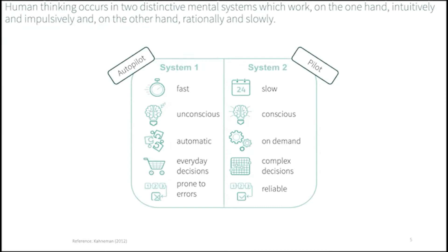Despite being irrational at times, human decision making is far from unpredictable. Research suggests the existence of two different cognitive systems or modes of thinking. System 1 — the autopilot or automatic mode of thinking — operates automatically, quickly, effortlessly, and without voluntary control. System 2, on the other hand — the pilot or reflective mode of thinking — works fully consciously, is slower, and requires effort and volition.